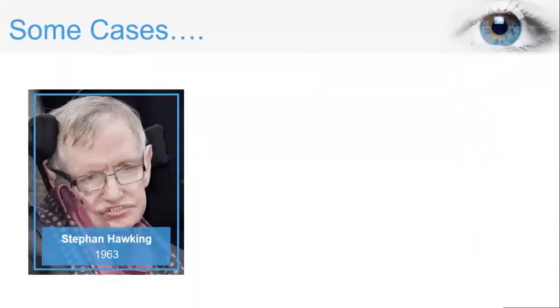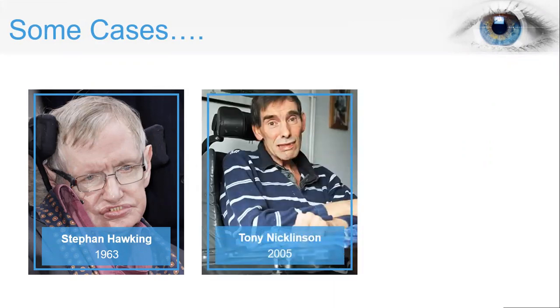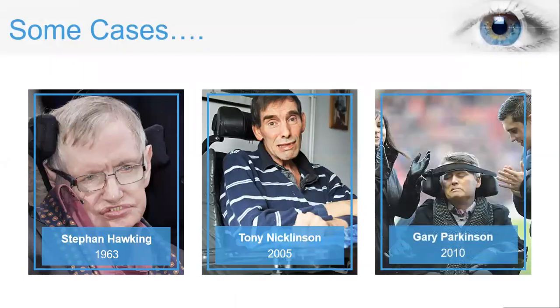Some cases include well-known Stephen Hawking. In 1963, he was diagnosed at the age of 21 with amyotrophic lateral sclerosis or Lou Gehrig's disease that gradually paralyzed him over the decades. He died at the age of 76 years in 2018. Then, Tony Nicklinson had a stroke in 2005 and died at age 58 in 2012 with locked-in syndrome. Gary Parkinson, an ex-footballer, had a severe stroke in 2010 and was diagnosed with locked-in syndrome.